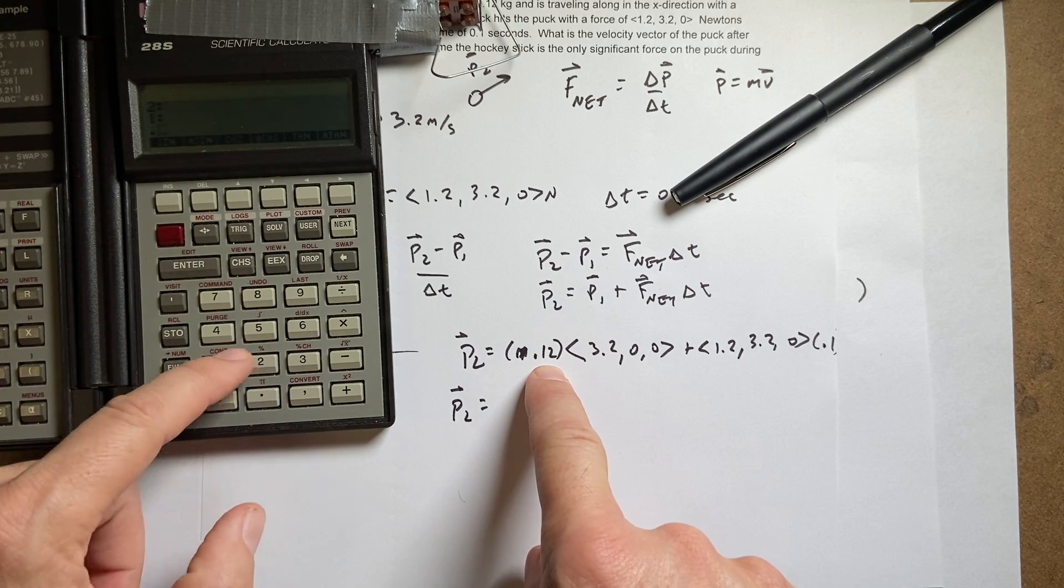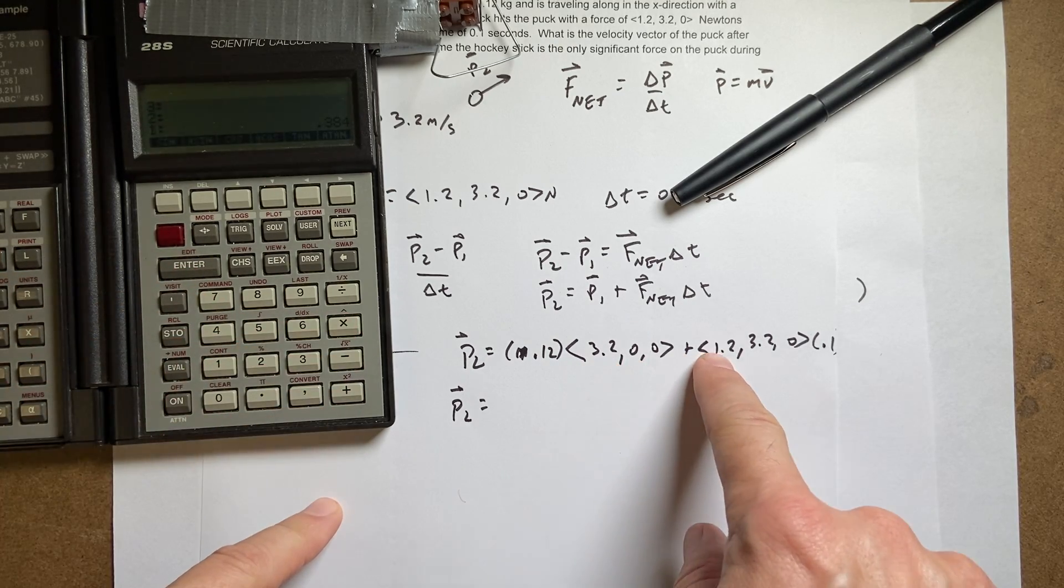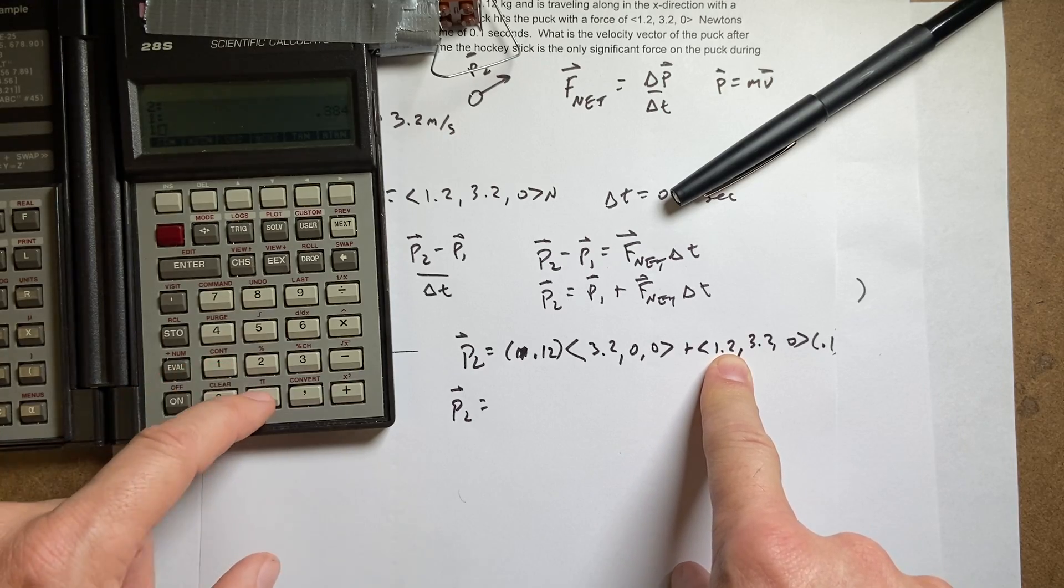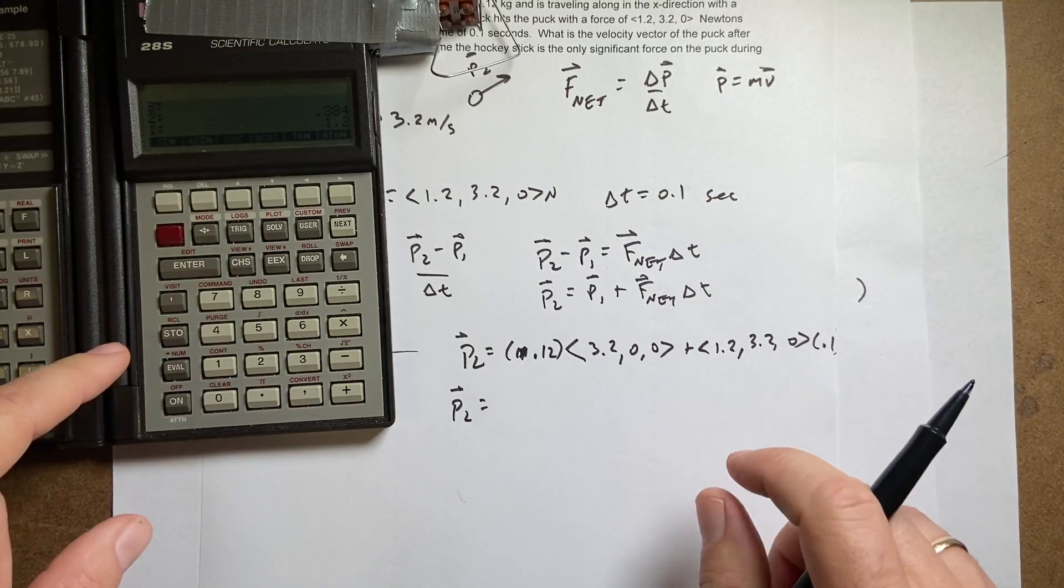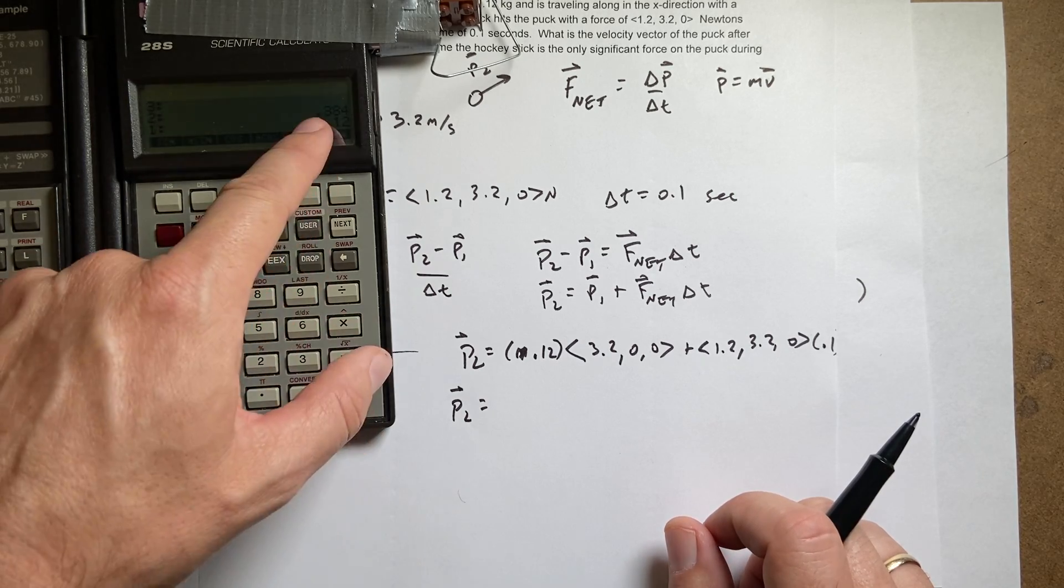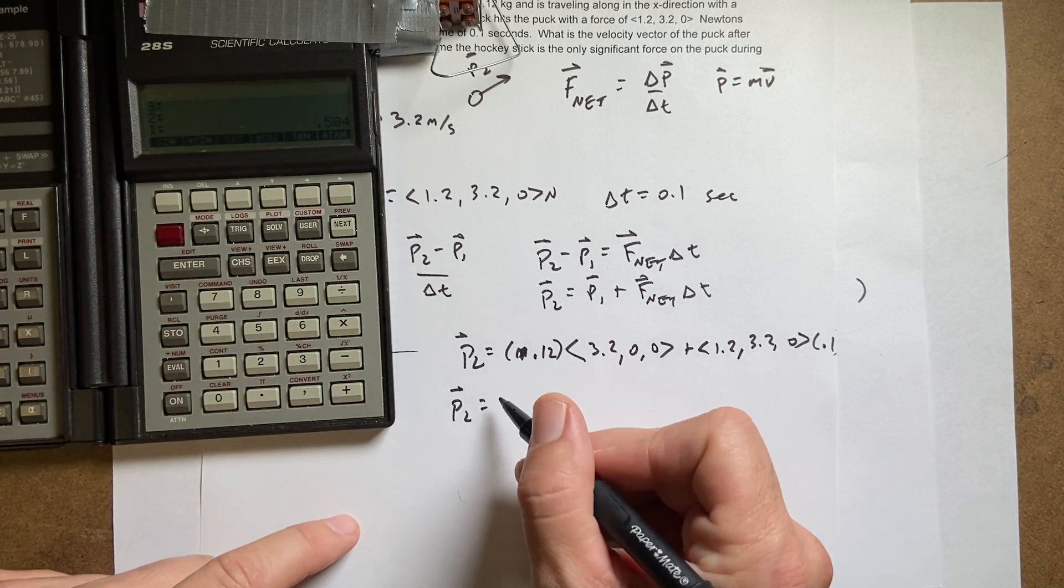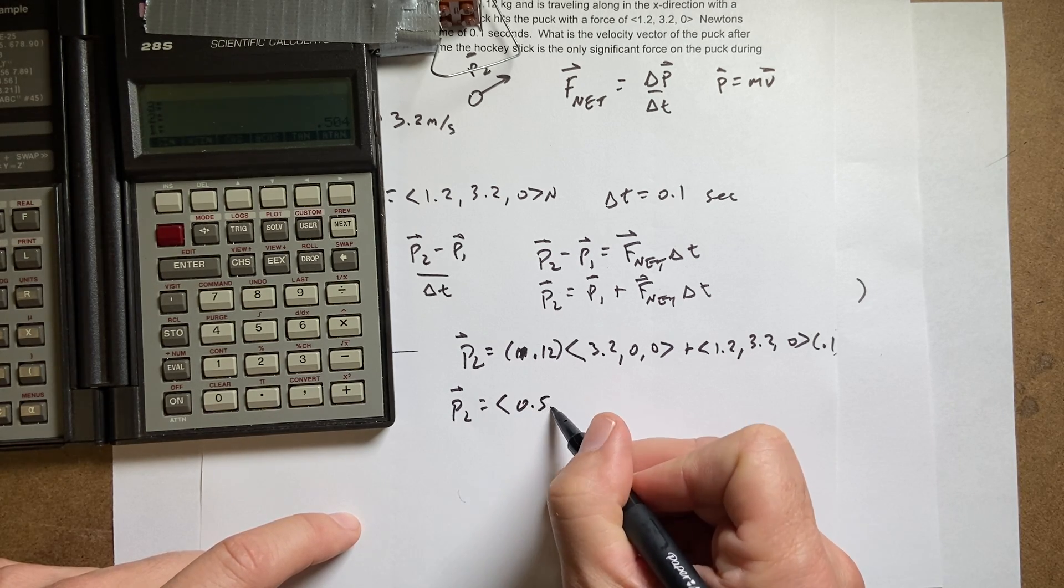So I'm going to say 0.12, enter, 3.2 times. Now I need to do this: 1.2, enter, times 0.1. Which actually that shouldn't be too hard, right, but I'll do it anyway. 0.1 times. And then I need to add those two together, plus. So I get 0.504.